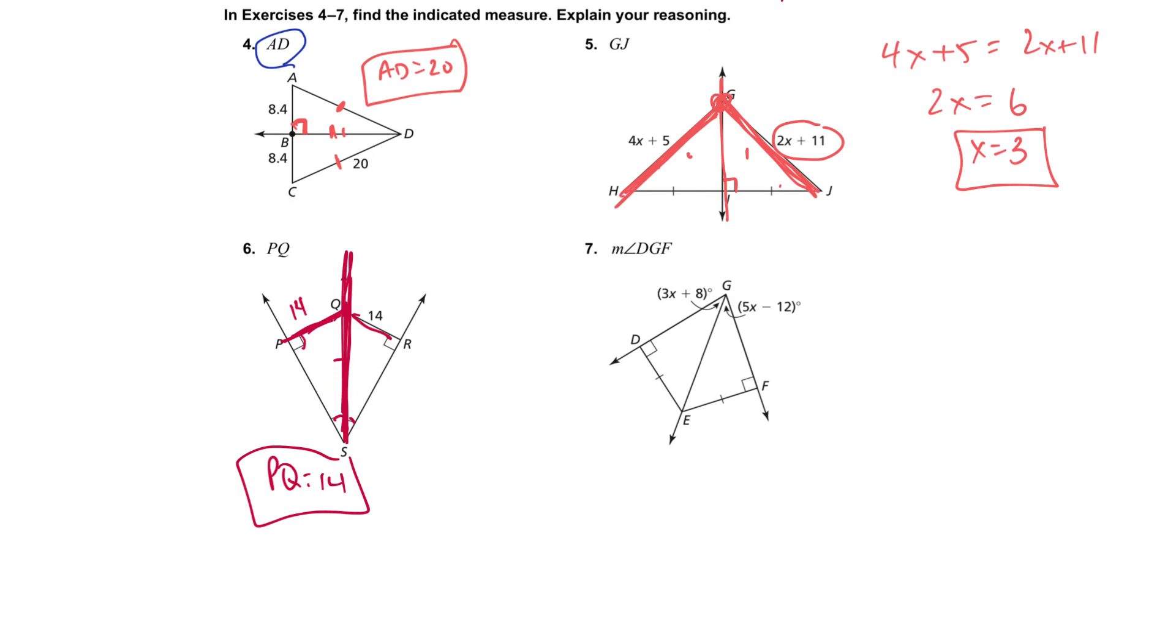Over here, the measure of angle DGF, DGF is the full one. If these are congruent, that means this has to be on the angle bisector. So 3X plus 8 has to be the same as 5X minus 12. So 2X over here is 20. So X is 10. And now we can plug it back in. Since X is 10, we need DGF. We need the whole thing. So we could say 3 times 10 plus 8, and that's 38. And there's two of those. There's this one that's 38, and there's this one that's 38. So the full angle DGF will be 76 degrees. Over here, we found X on JG, but they wanted JG. So you got to plug that back in. That's 2 times 3 plus 11. So that's 6 plus 11, which is 17.